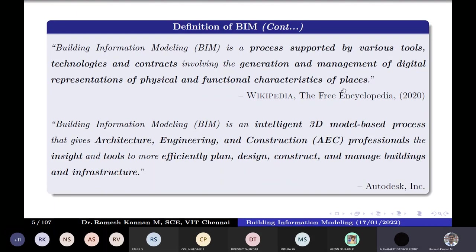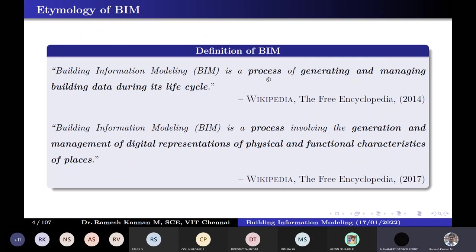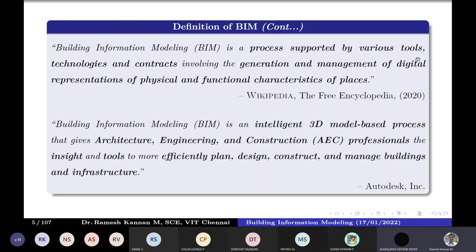This is the 2017 Wikipedia definition. In 2020, they expanded the same thing — instead of just being a process, it also involves various tools and technologies. It is not only a process anymore but more of an integration of different processes — it is interdisciplinary. It is not only managing physical assets or functional characteristics, but also looking into technological aspects like the contractual aspect. This is the current comprehensive definition, likely still valid in 2022.